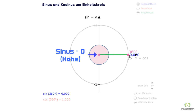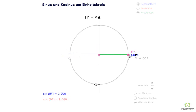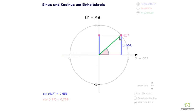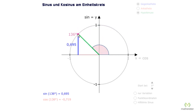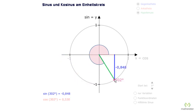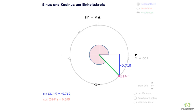We can notice that for angles from 0 to 180 degrees, we have a positive sine value. And for angles between 180 degrees and 360 degrees, the sine value is negative. As you can see, the unit circle is a very helpful tool to determine the sine value for any angle.